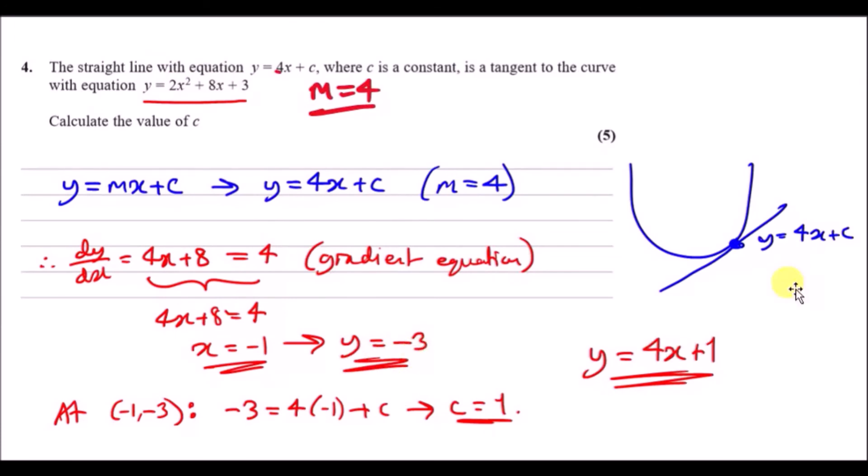Now to actually solve this equation, all you need to do is realize you've got this equation. Let's go ahead and plug in the coordinates minus 1, minus 3 at this point. Doing so, you're going to get minus 3 equals 4 times minus 1 plus c.